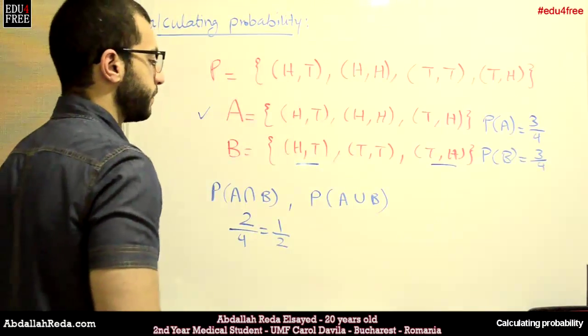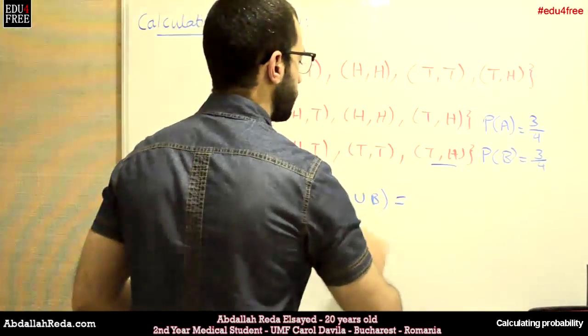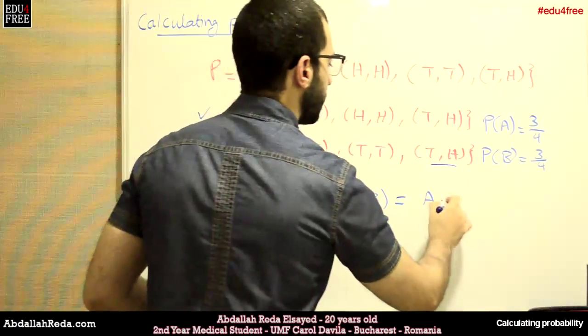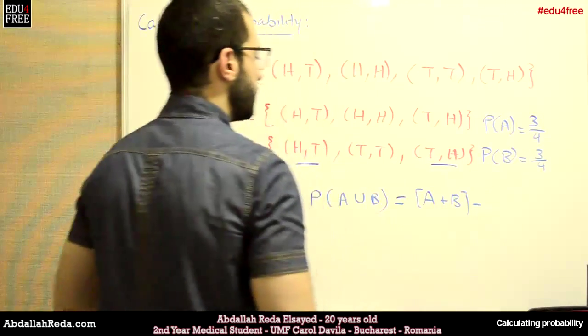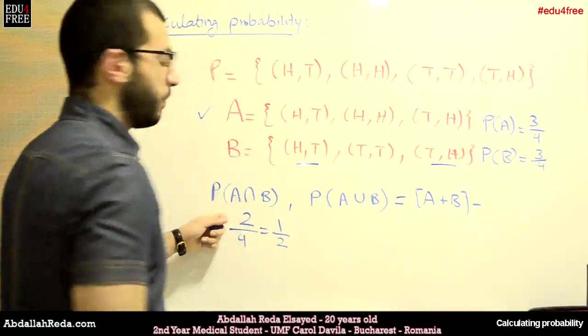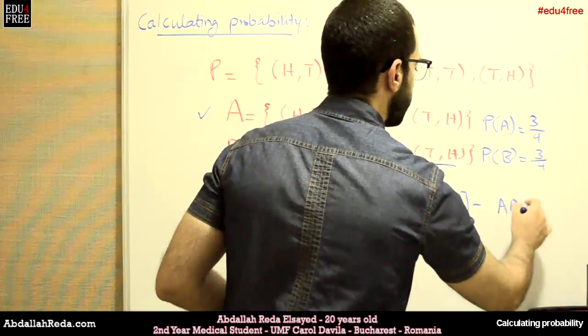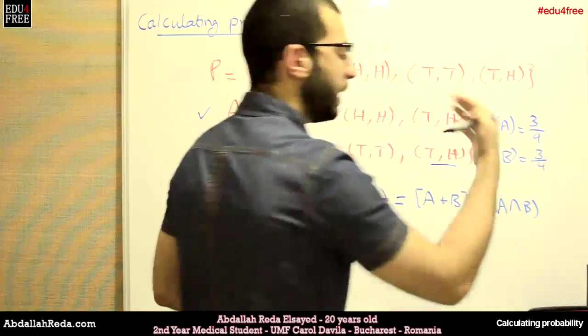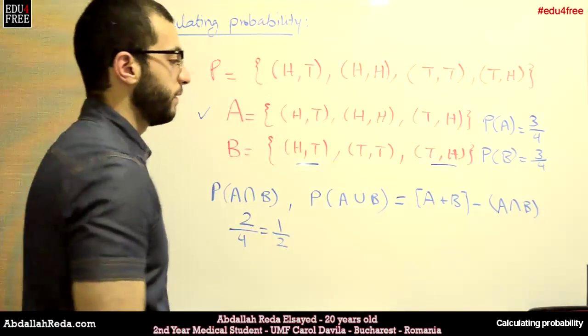So what we do is that we say that A union B equals A plus B minus A intersection B. So that we do not repeat these elements, which are common in both events.